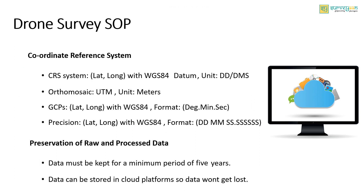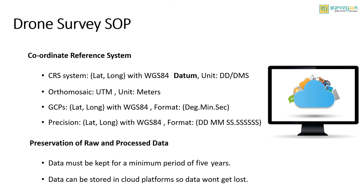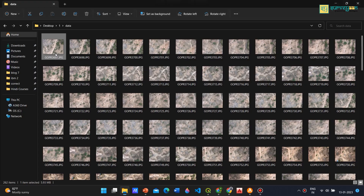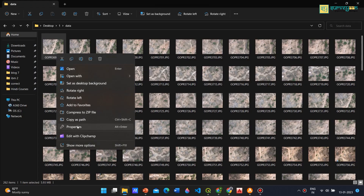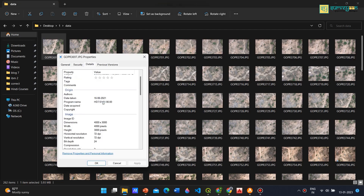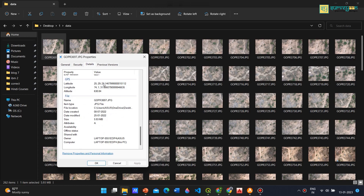A coordinate reference system defines how the two-dimensional projected map relates to real places on the earth. The CRS needed to be used for different outputs are discussed here. The coordinate reference system of the photos captured should be in latitude/longitude with WGS84 datum, and the unit should be in decimal degrees or degrees, minutes, seconds. A datum is the model of the earth used in mapping. Here you can see the latitude/longitude values are in the degree, minute, second format.